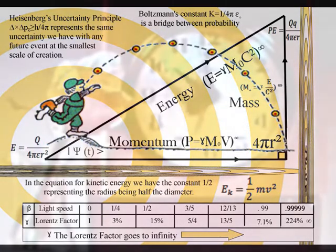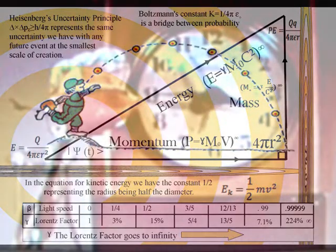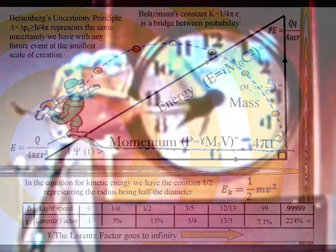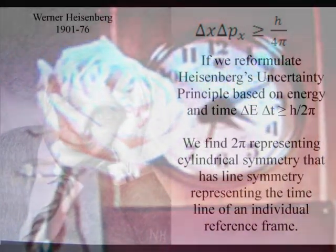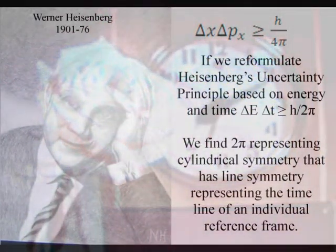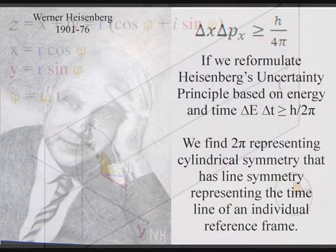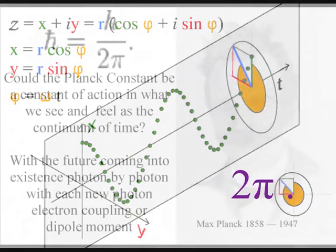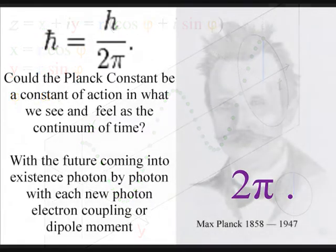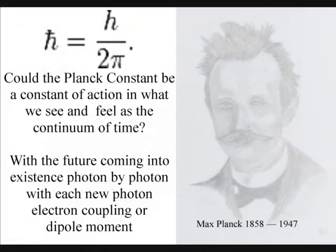This process forms a period of time. And if we reformulate Heisenberg's uncertainty principle based on energy and time, we find 2π representing line symmetry. This line symmetry represents the timeline of the ball, with the Planck constant being a constant of action in the dynamic geometrical process of space and time.